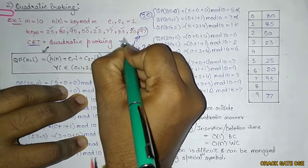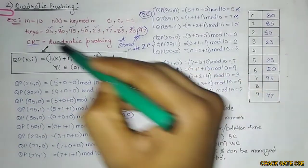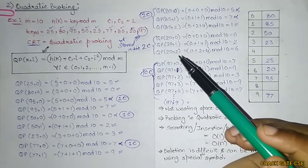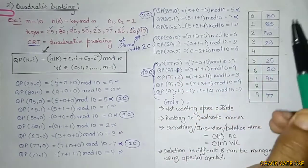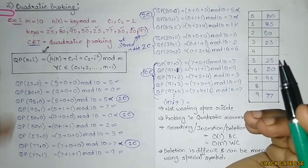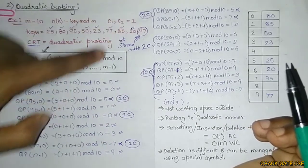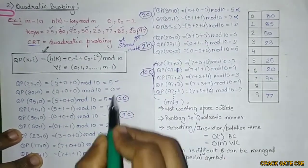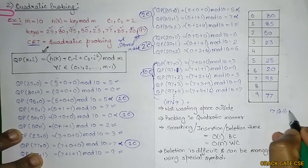If asked which key cannot be stored in the hash table, the answer is 97. If asked for the total number of collisions using quadratic probing, sum all collisions: 10 (for 97) + 2 + 1 + 1 + 1 + 2 = 17 total collisions.